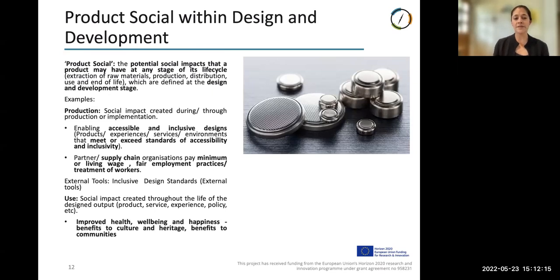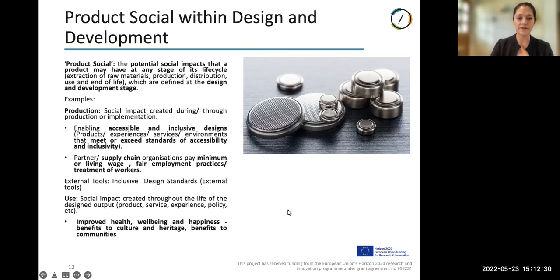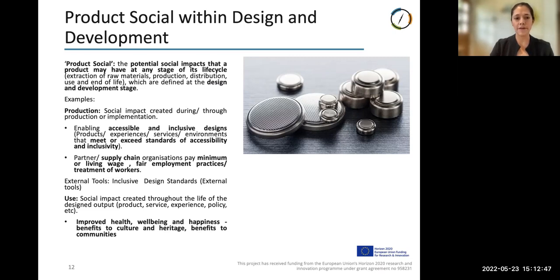What we're defining as 'product social' is the potential social impacts that a product may have at any stage of its lifecycle, which are defined during the design and development stage. Examples include: during production — accessible and inclusive designs that meet or exceed standards of accessibility and inclusivity; from a supply chain perspective — conditions around minimum or living wage, fair employment practices, and treatment of workers; and within the use phase — product social considerations around improved health, wellbeing, happiness, or benefits to communities.